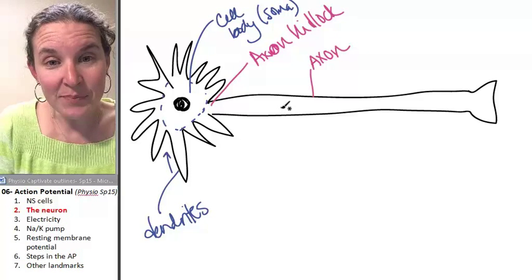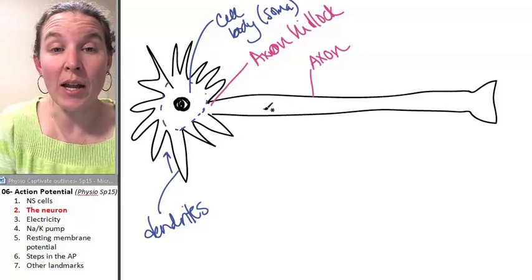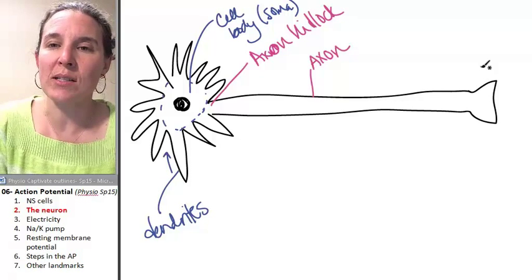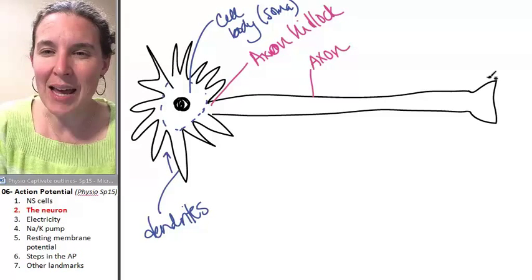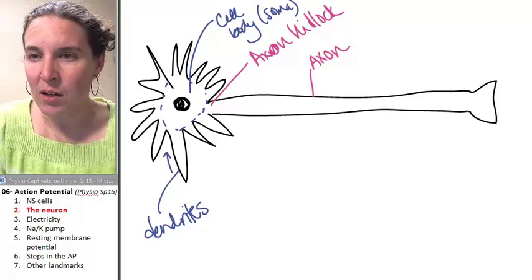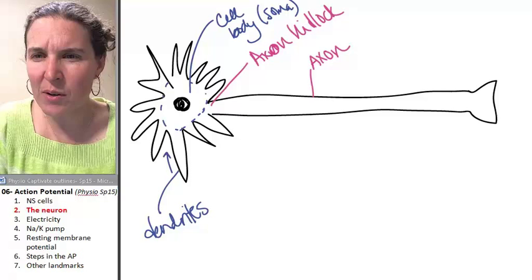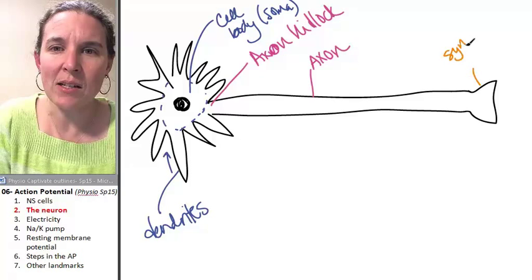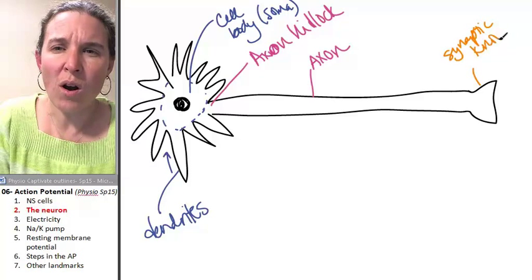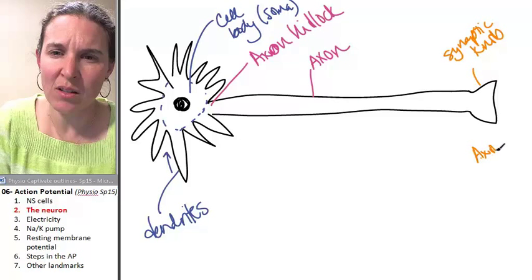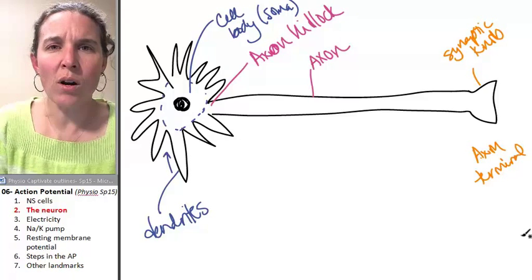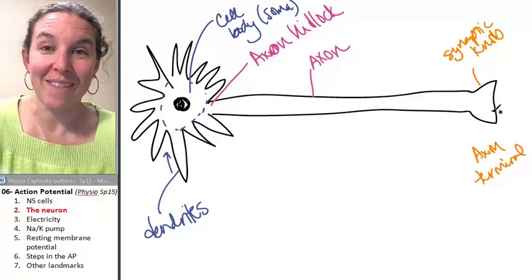The axon information is going to travel away from the cell body in the axon. And it travels down to something called a synaptic knob. I'm running out of colors. How can I run out of colors? I've got like every color on the planet available to me. This is called a synaptic knob or an axon terminal or a bouton because that means button in French.